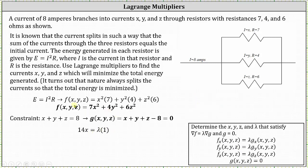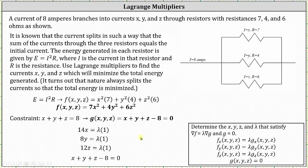The partial of f with respect to x is 14x, and the partial of g with respect to x is one, giving us the first equation: 14x equals lambda. The partial of f with respect to y is 8y, and the partial of g with respect to y is one, giving us 8y equals lambda. The partial of f with respect to z is 12z, and the partial of g with respect to z is one, giving us 12z equals lambda. We also have the constraint x plus y plus z minus eight equals zero.